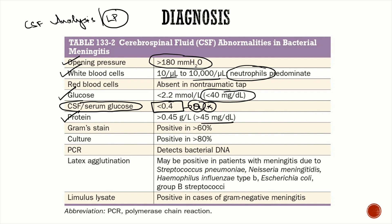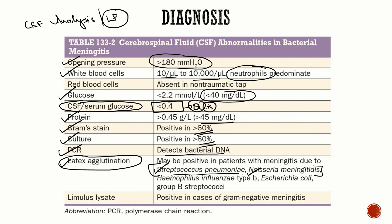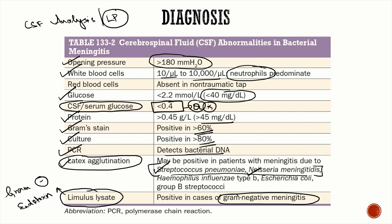CSF protein is raised above 45 mg/dL. Organisms are visualized on Gram stain in more than 60% of cases and culture is positive in more than 80%. Other CSF investigations include PCR for bacterial DNA, latex agglutination — highly specific for pneumococcal and meningococcal meningitis — and Limulus lysate assay, which detects gram-negative endotoxin and is the investigation of choice for gram-negative meningitis.